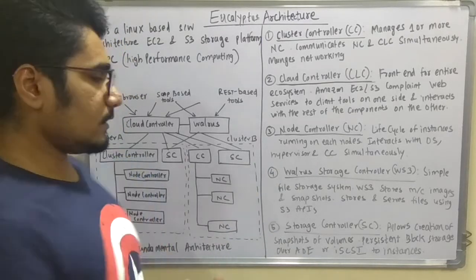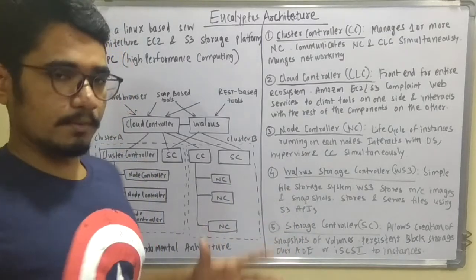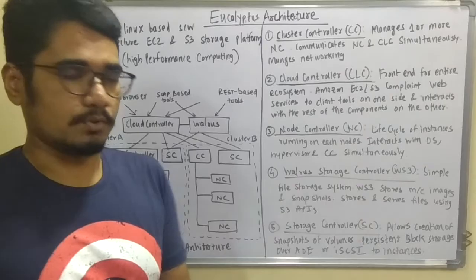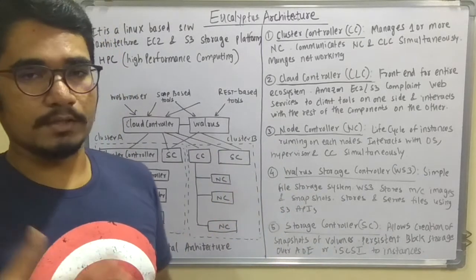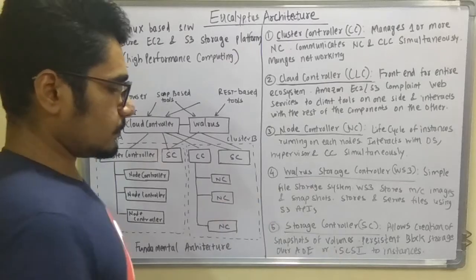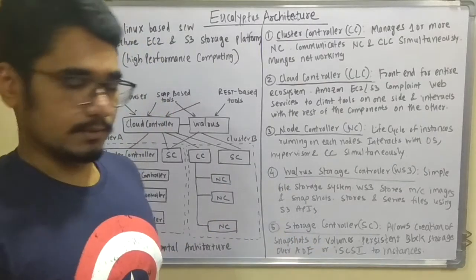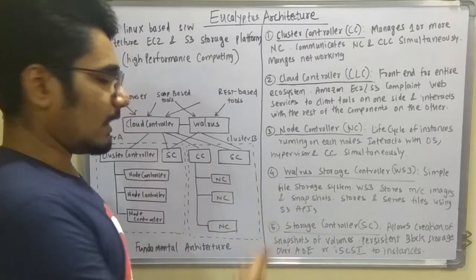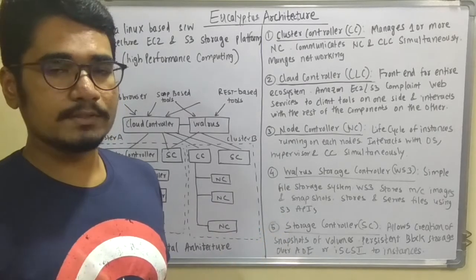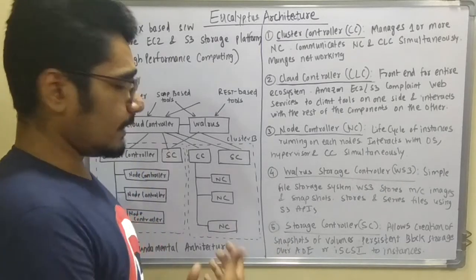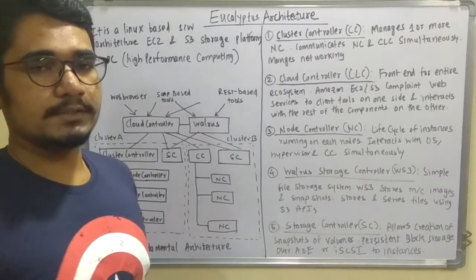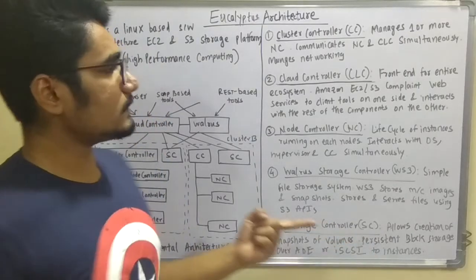Finally, the Storage Controller (SC) is the major storage component — Walrus is a smaller part, while the Storage Controller is the larger one. It allows creation of different kinds of volumes across different machines and snapshots of volumes, acting as a huge repository for any kind of checkpoints. It also provides persistent block storage over AoE (ATA over Ethernet — where ATA refers to SATA or PATA, the Serial or Parallel Advanced Technology Attachment) or iSCSI (Internet Small Computer System Interface) for managing processor-level activities for instances.